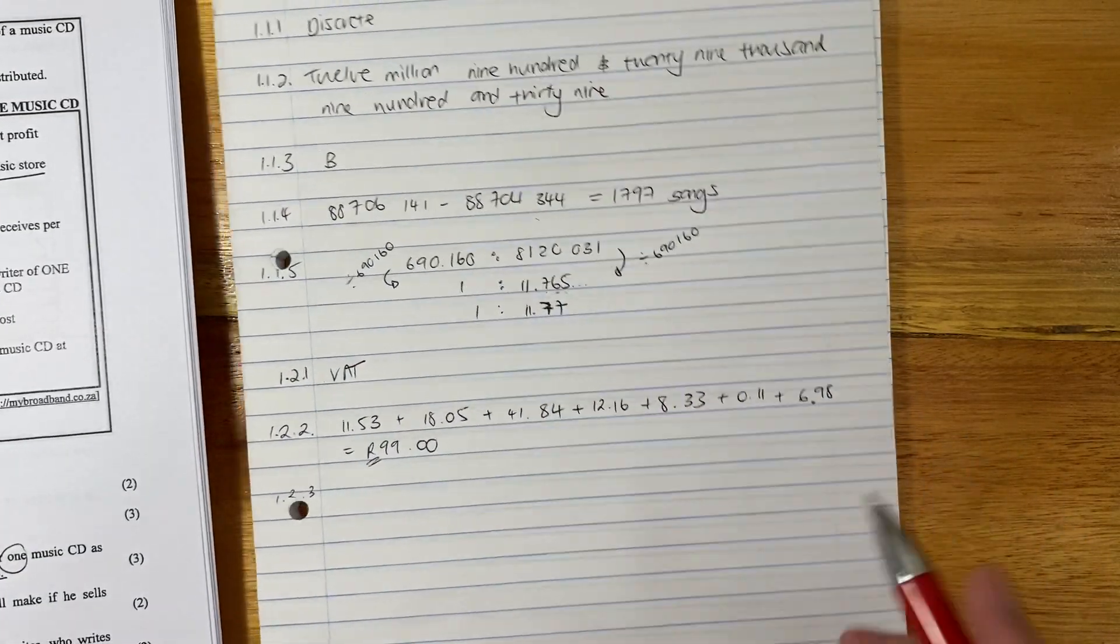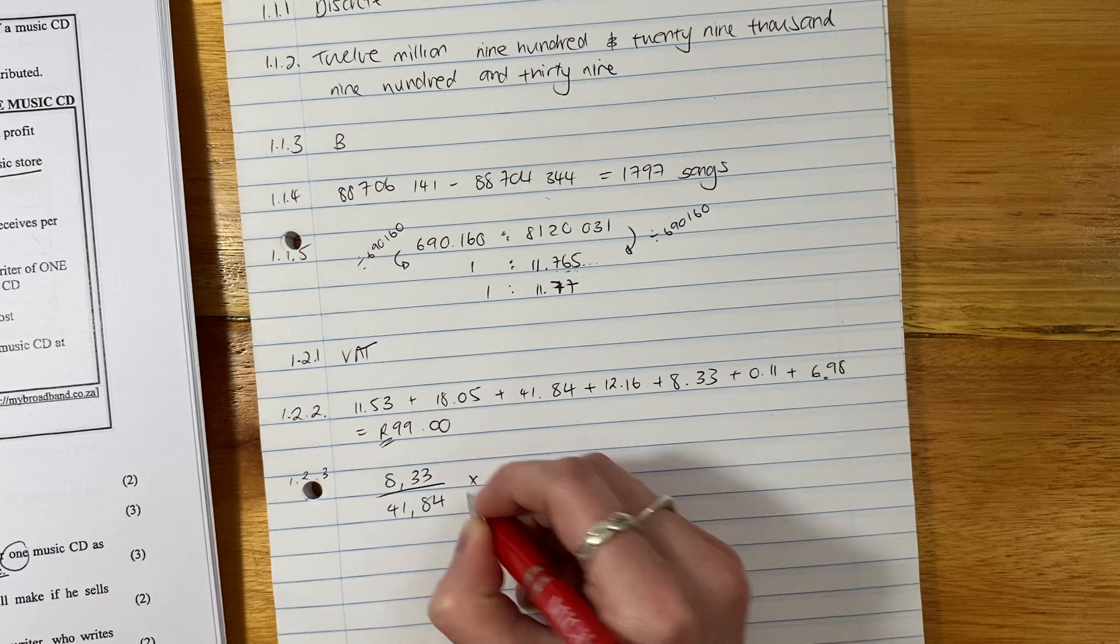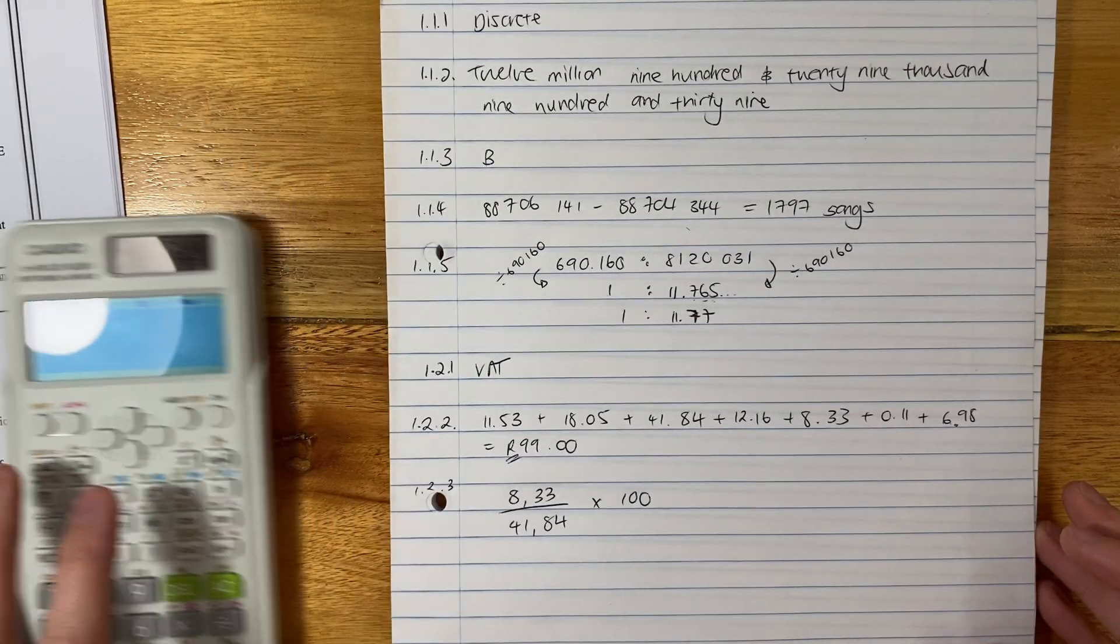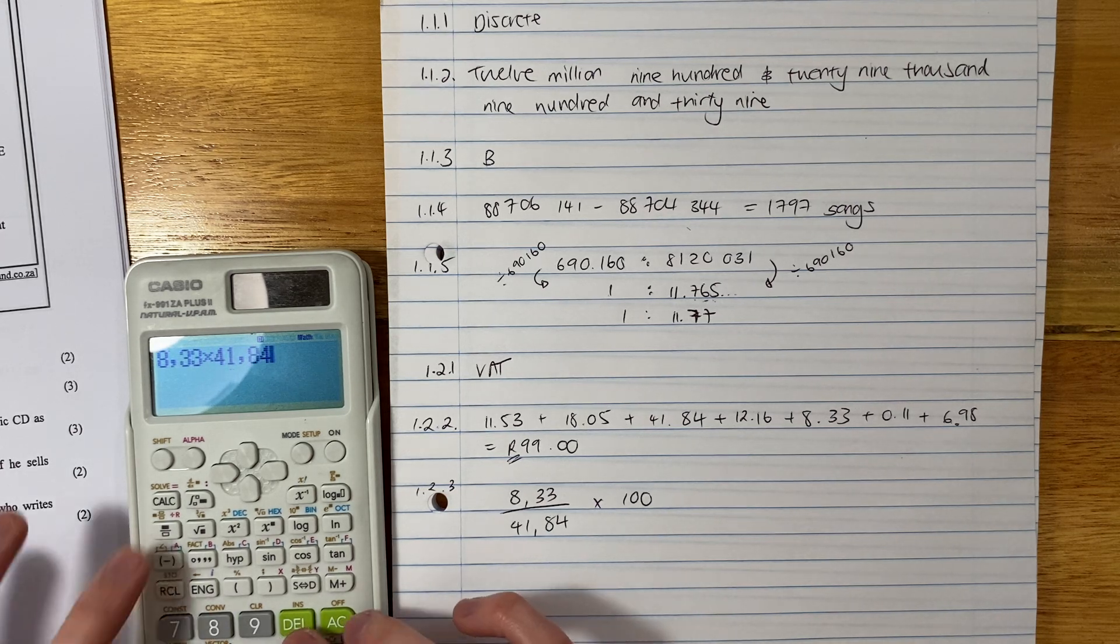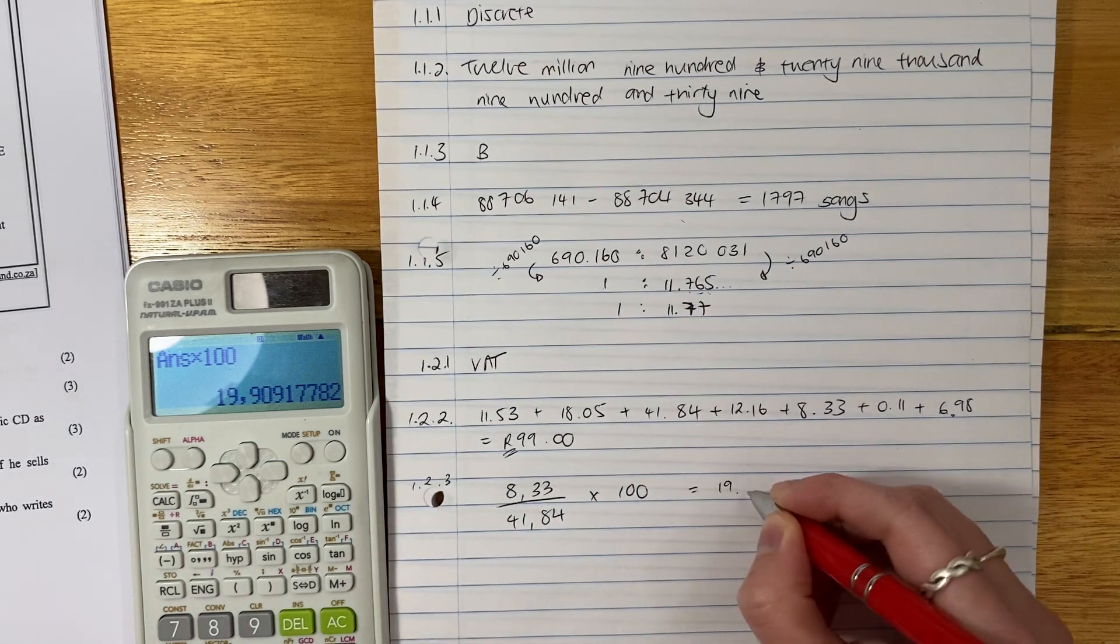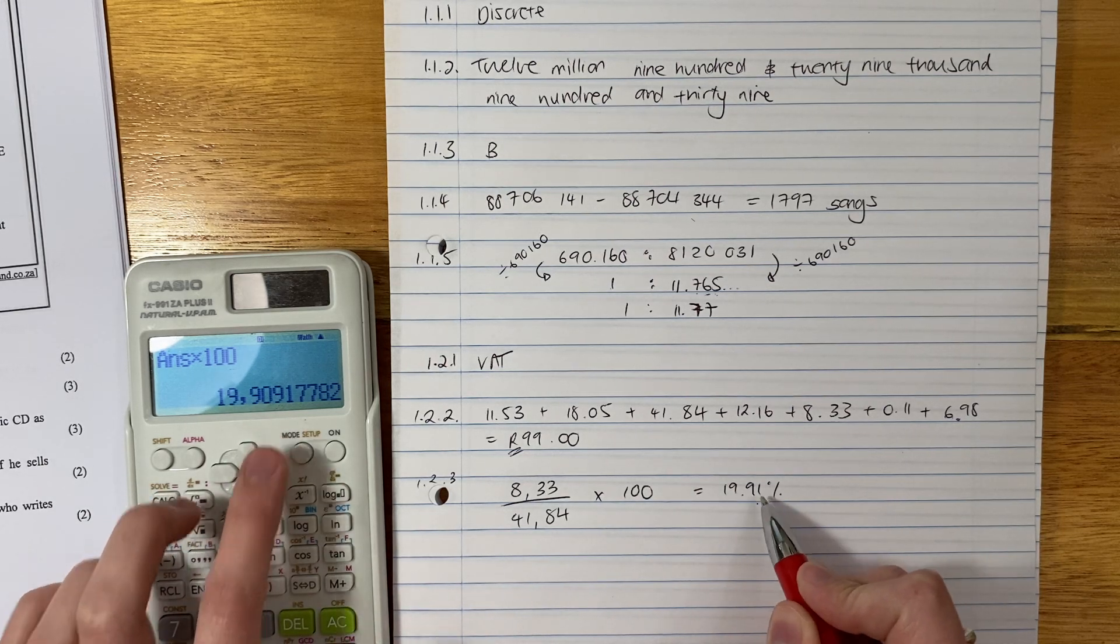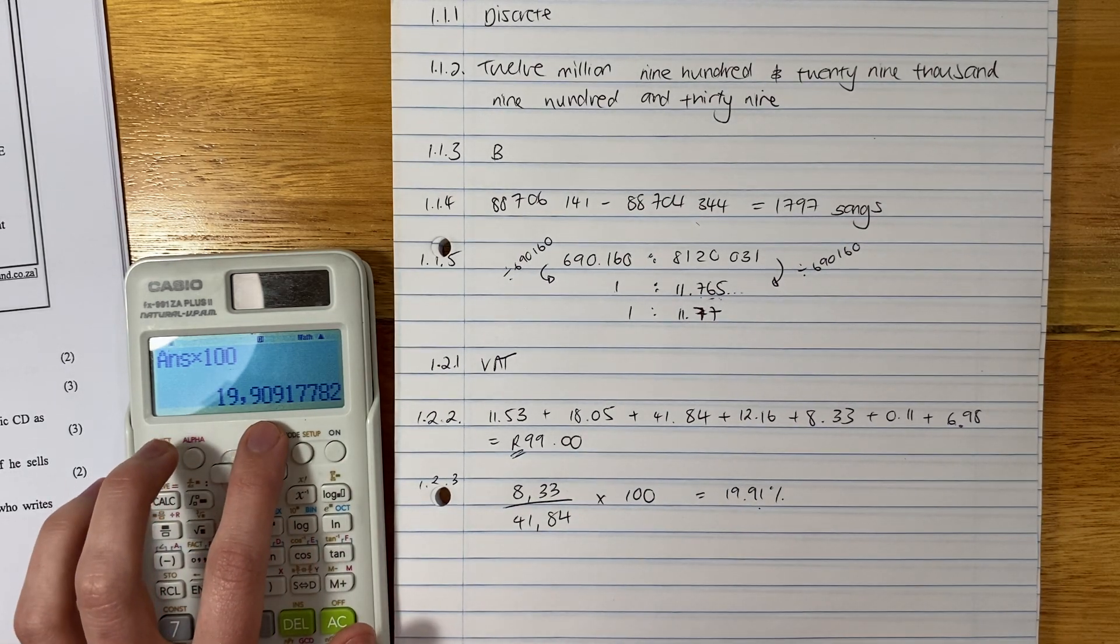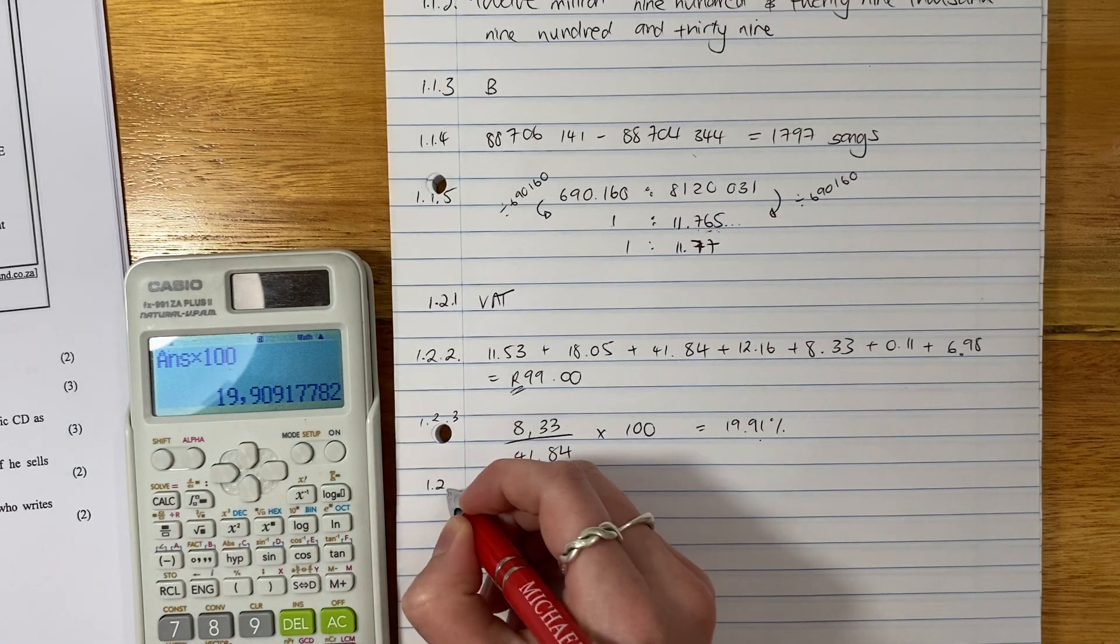So we're going to say 8.33 and we're going to put it over 41.84. They asked for a percentage and we know this is our standard way of converting a fraction to a percentage. We move this across so that you can see. Right, you say 8.33 times 41.84. Oh, not times. Sheesh. Doing some crazy things here. Divide and then times by 100. And my percentage is 19.91%. Now, look. On here it was 9091. What did I do here? I rounded it off. Remember I said to you, if in doubt, round off to two decimal places. I saw that in order to round off to two decimal places, I had to look at the third decimal. Third decimal was above five. I round up.